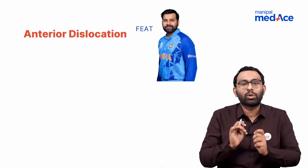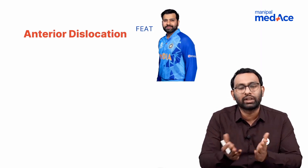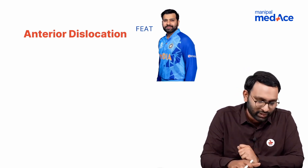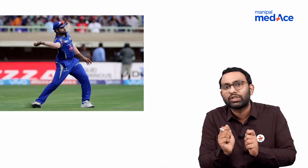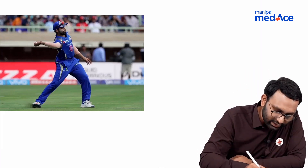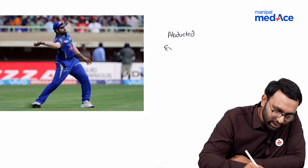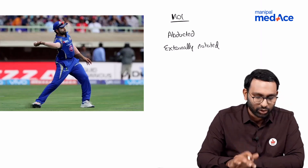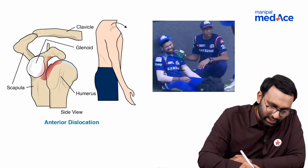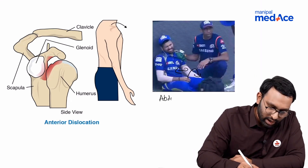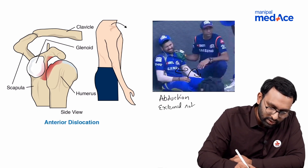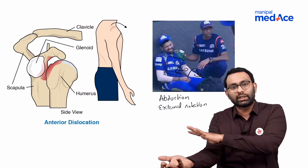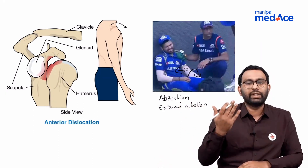Now for anterior dislocation, I'll explain using Indian cricket team captain Rohit Sharma. His hands are abducted and externally rotated — that is the mechanism of injury. The attitude is similar: the patient's hand is in abduction and external rotation, rotated to the other side. The patient will come to you with the hand at the side of the shoulder, abducted and externally rotated. This is the classical attitude of a patient with anterior shoulder dislocation.